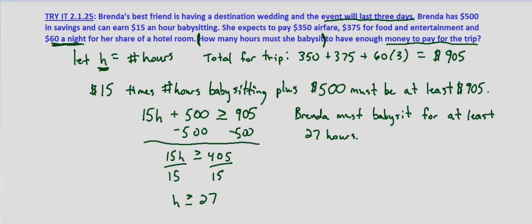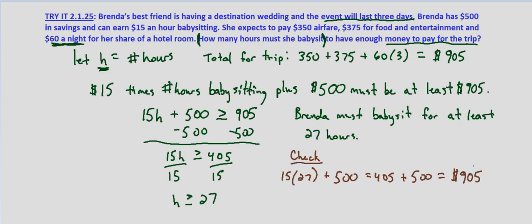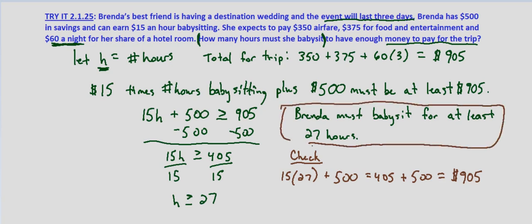Now how do we check this? Since we ended up with a whole number, we should be able to check by simply verifying that 27 hours equals $905. So $15 an hour times 27 hours plus $500, because she started with $500, equals 405 plus 500, which equals $905 — the minimum amount she needs to go on her trip. So Brenda must babysit for at least 27 hours.